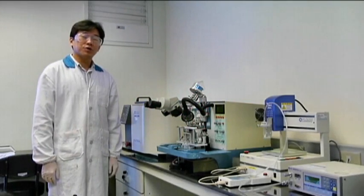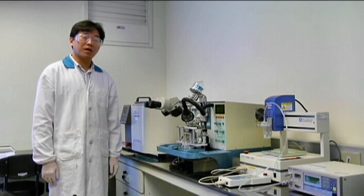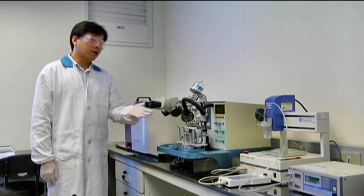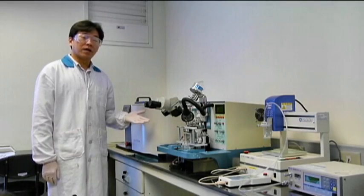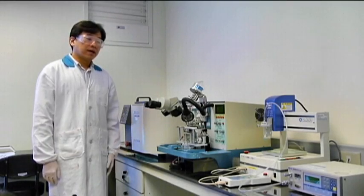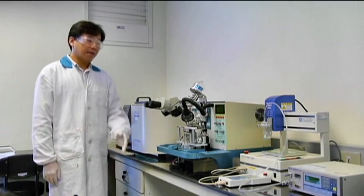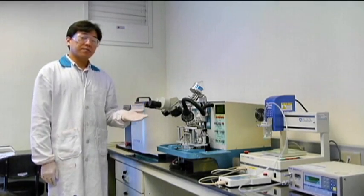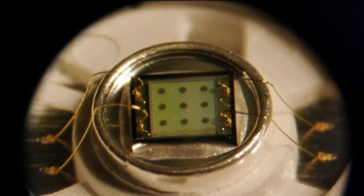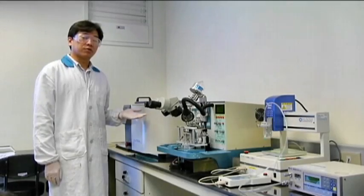Now I will show the LED package process for everybody. All the instruments are for the LED package. There are three steps. First step is the die-bonding. Second step is the wire-bonding. Final step is the cover solutions.